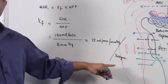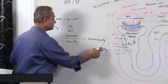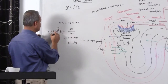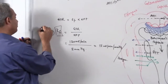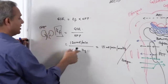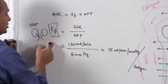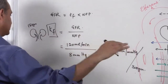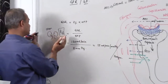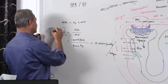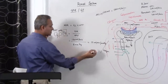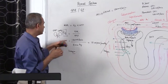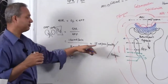Where does the 300 grams come from? This is very important. This filtration coefficient is for both kidneys. One kidney is about 150 grams, and since we are talking about GFR and net filtration pressure for both kidneys, we sum them: 150 plus 150 equals 300 grams of renal substance.